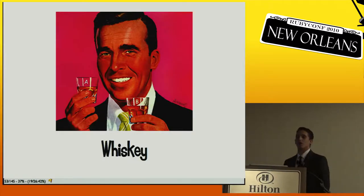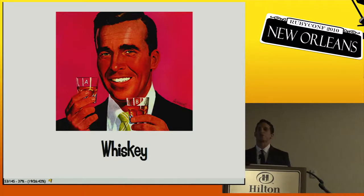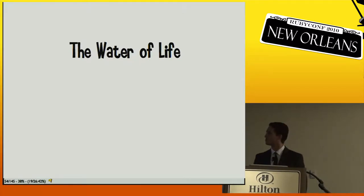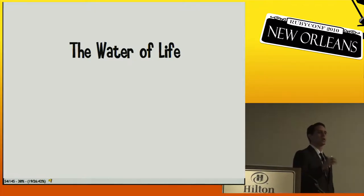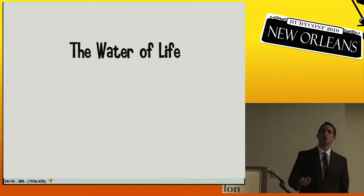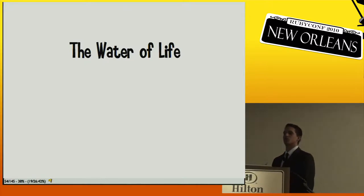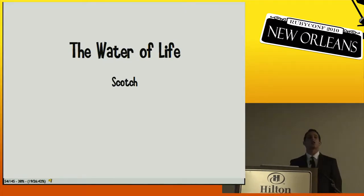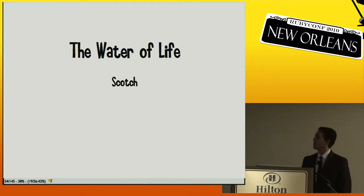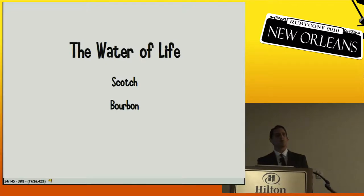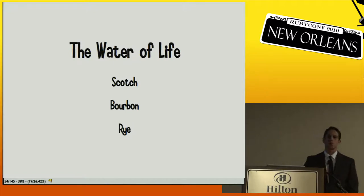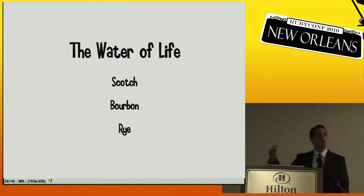First: whiskey. Whiskey comes from a Gaelic term meaning 'the water of life', which I agree with. There are three types: Scotch is made in Scotland; Bourbon is an American whiskey made from at least 51 percent corn mash; and Rye is made from rye. These are all made from different grains but they all mean whiskey.